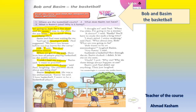Here, note the pronunciation: in 'laughed,' G-H is pronounced like F, and E-D is T, so we pronounce it 'laughed.' Basim laughed too — he was a bit embarrassed. 'Sorry,' he said. 'I love basketball, I want to be a basketball player.' 'I thought so,' said Pao. 'When I am older, I'm going to be a doctor.' So Pao is planning to be a doctor in the future. 'Really? You have to study for such a long time.' 'I don't mind, I enjoy studying,' said Pao.